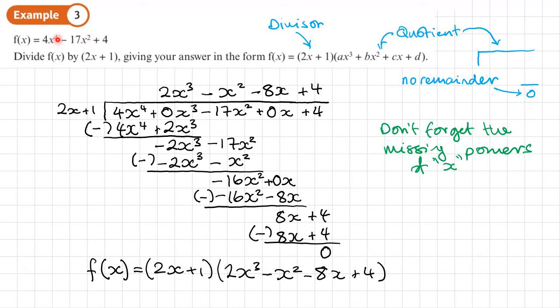If you were to multiply this out, you would get the original expression back. Later on, you'll see that because we can write it in this factored form, it means that two X plus one is a factor of F of X.